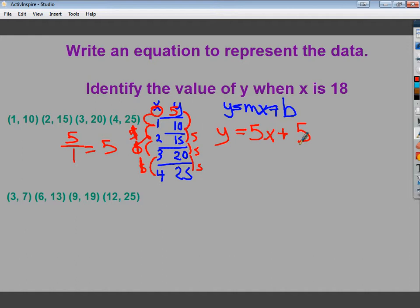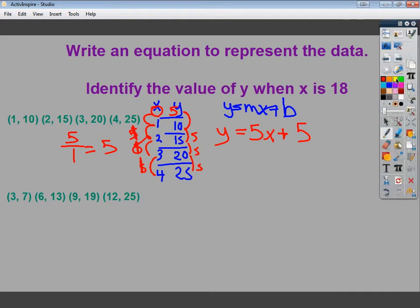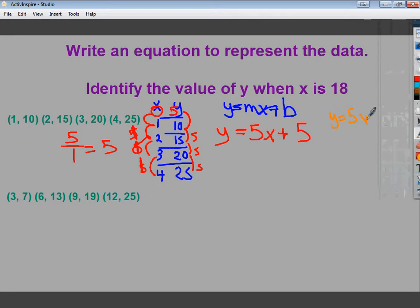So my equation is y equals 5x plus 5. I can test it. Plug in 2. 2 times 5 is 10, plus 5 more gives me 15. Works with 3 as well. So that's my equation. Now I need to find the value when x is equal to 18. So I'm going to do y is equal to 5x plus 5. My x here is 18. So my y value matching out. 5 times 18 is 90, plus 5 more is 95. So I can say that I have 18 and 95.